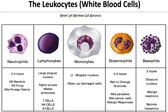Neutrophils contain 2 to 5 lobes and kill bacteria, fungi, and foreign debris. Lymphocytes have a large singular nucleus, fight against viruses, make antibodies, and are associated with T cells, NK natural killer cells, and B cells. Monocytes have a U-shaped nucleus and clean up damaged cell debris. Eosinophils have 2 to 5 lobes with red to orange granules; they kill parasites, kill cancer cells, and help with allergic responses. Basophils have 2 lobes and an obscure nucleus hidden under a microscope; they are responsible for allergic reactions and secrete histamine.